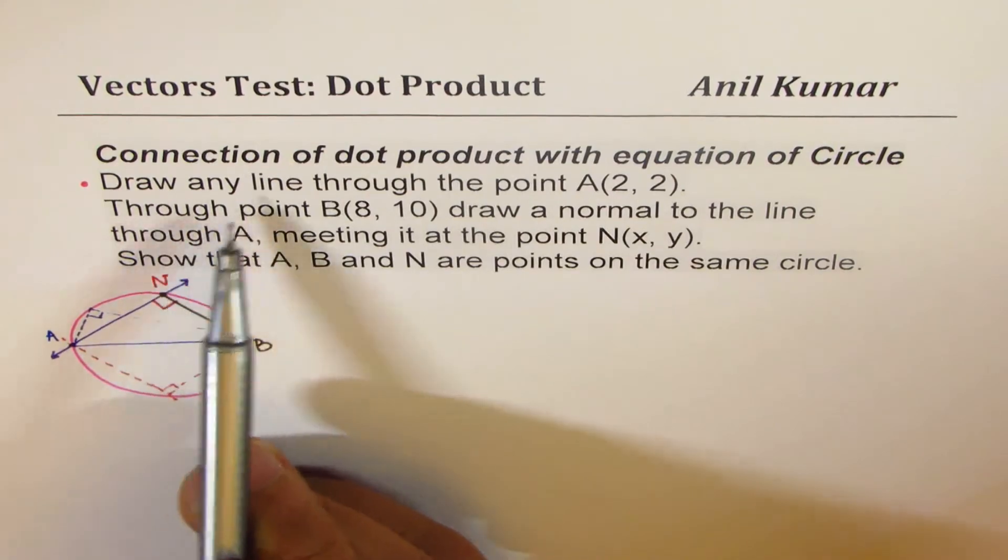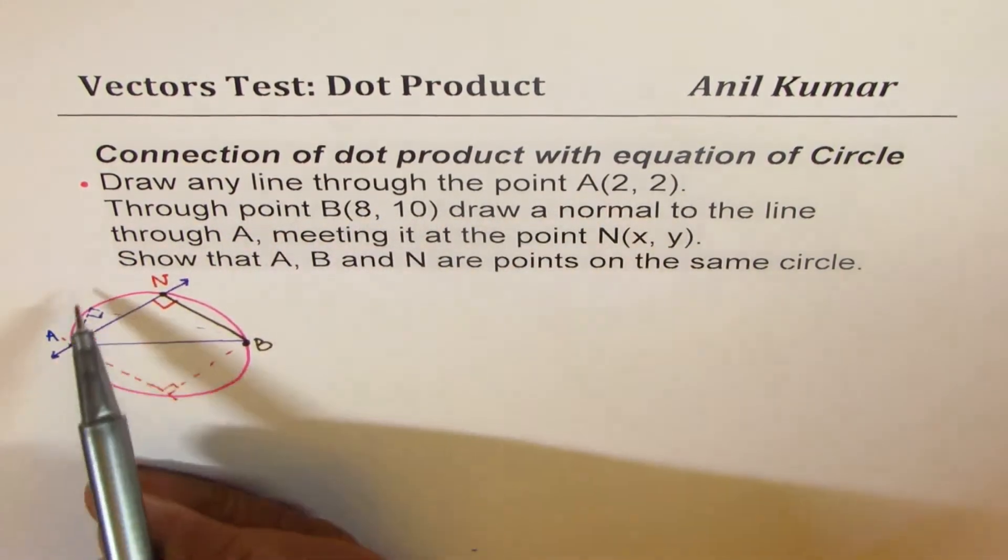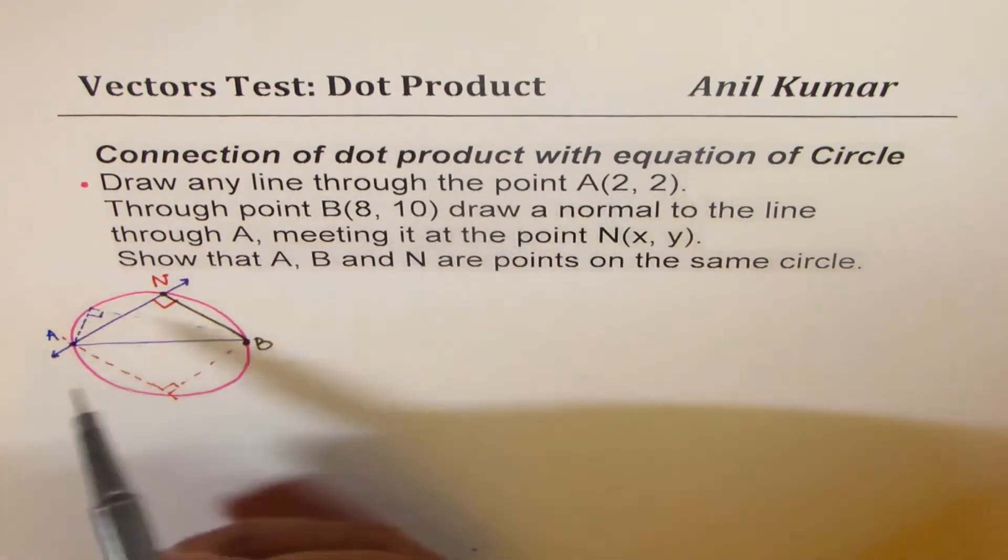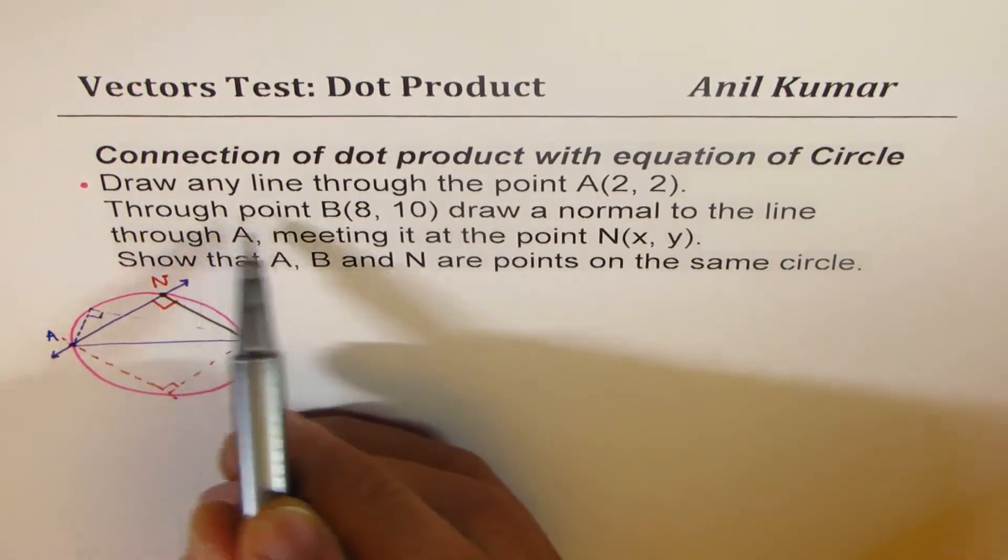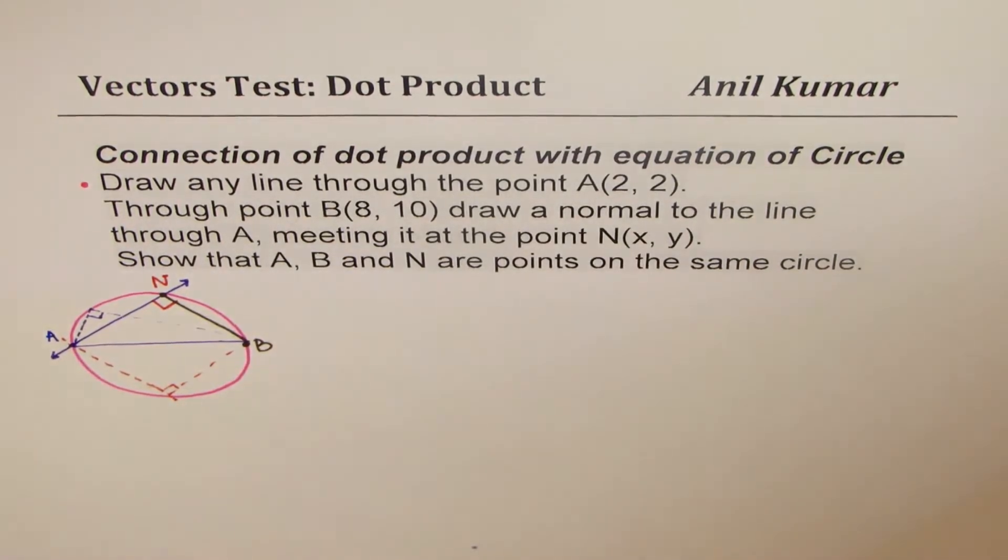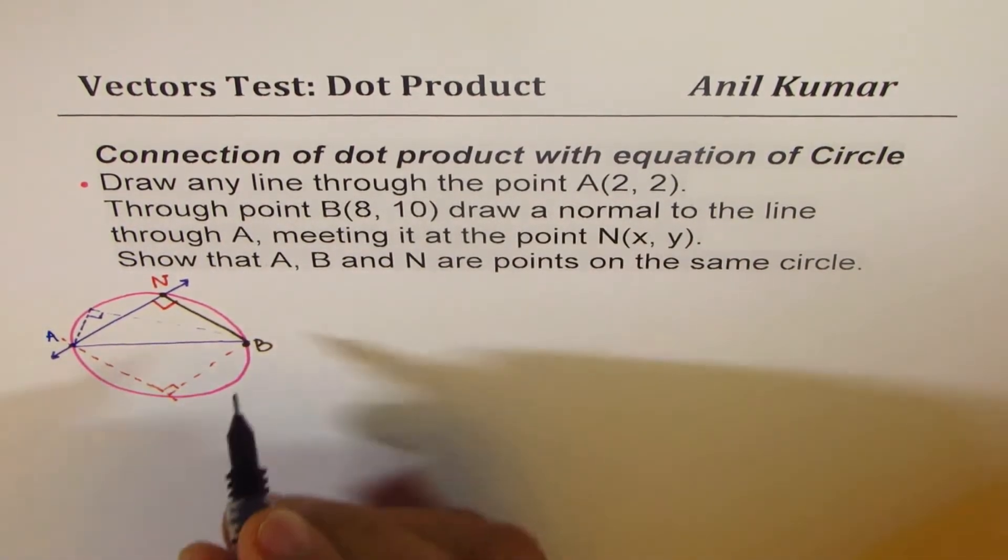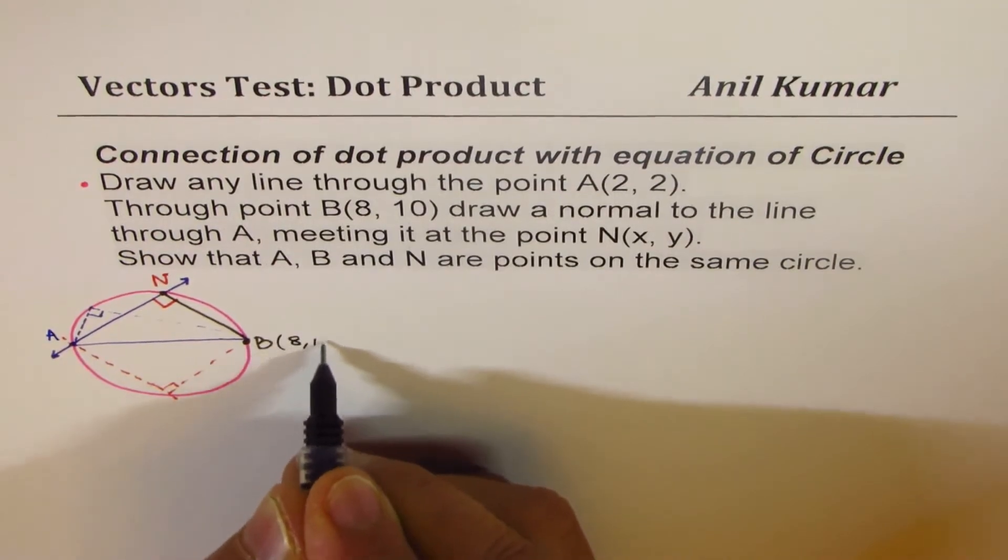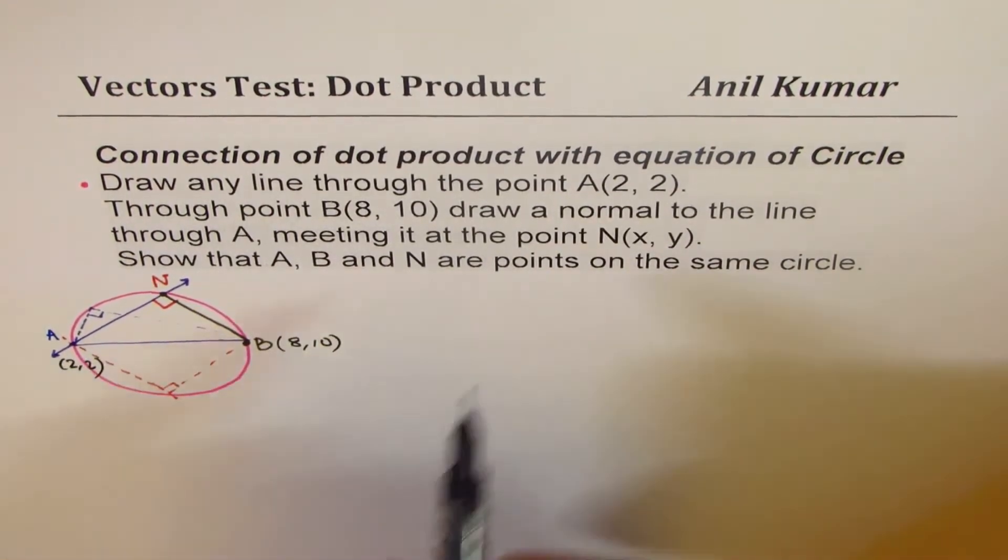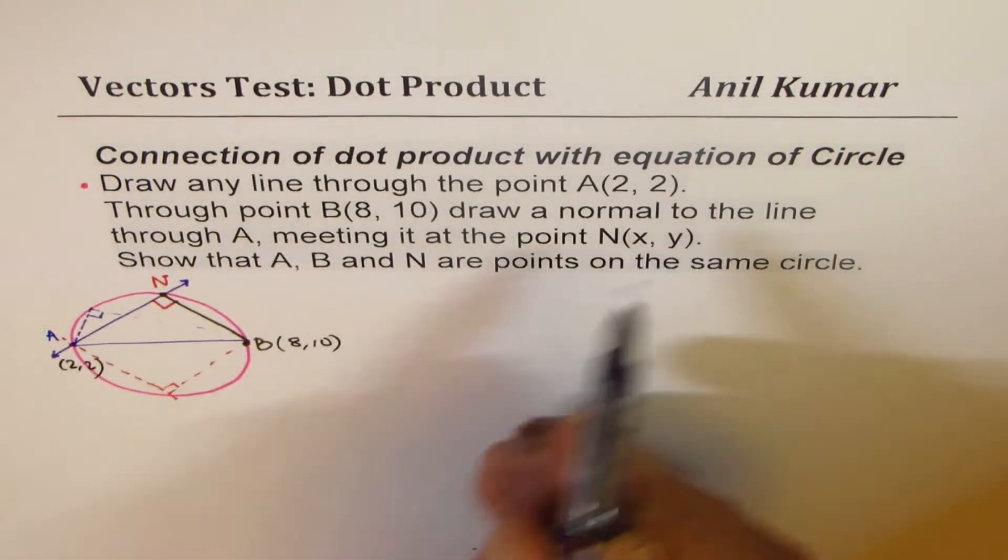So now let's look into the question once again. It says draw any line through the point A. It could be any line - this line, that line, or that line, any line through A. So let's assume this is the line we're talking about. Through point B, there's some point B which we are saying is 8, 10. So let me write down the coordinates of B as 8, 10, and coordinates of A as 2, 2.